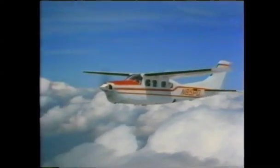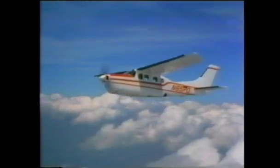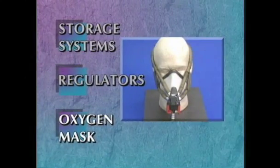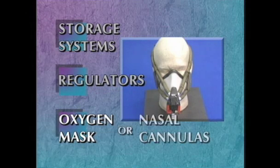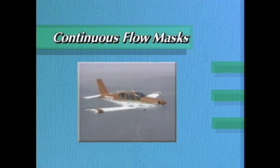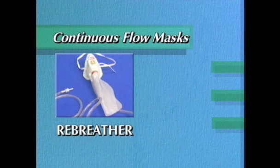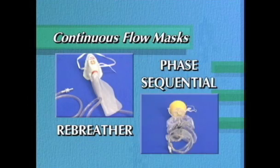In summary, you must ensure that there is adequate oxygen flow and the proper percentage of oxygen is being received for the altitude you are flying, to protect against hypoxia. The third part of any oxygen system is an oxygen mask or nasal cannulas. General aviation continuous flow oxygen masks come in two types: rebreather and phase sequential.